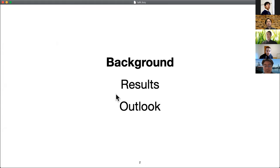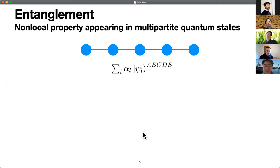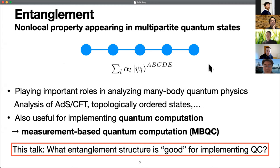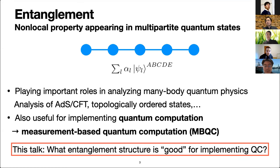I'm beginning with explaining the background. Entanglement is a non-local property appearing in multi-partite quantum systems on a composite system. In this talk, I write each subsystem as a circle and an entangled state as lines between circles. As shown in many other talks, entanglement plays important roles in analyzing many-body quantum physics, such as ADS-CFT and topologically ordered states. On the other hand, entanglement is also crucial in implementing quantum computation, especially by means of measurement-based quantum computation, or MBQC. A main goal of this talk is to introduce our recent investigation of an interesting entanglement structure that is useful for implementing quantum computation at low overhead cost.